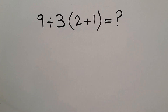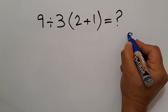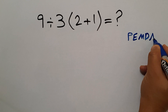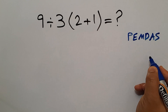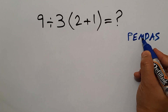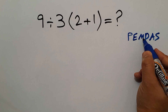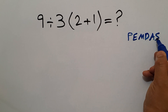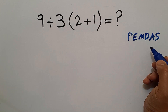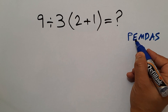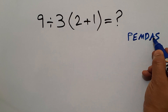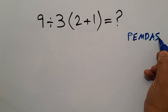Because according to the order of operations, which is PEMDAS: P stands for parentheses, E stands for exponents, M and D stands for multiplication and division, and A and S stands for addition and subtraction. We first do parentheses, then exponents, then multiplication and division, and finally addition and subtraction.